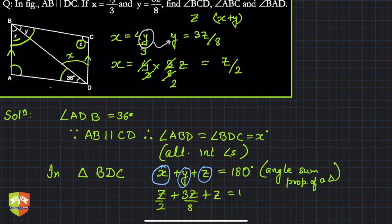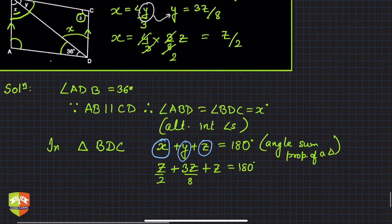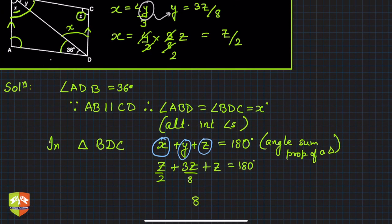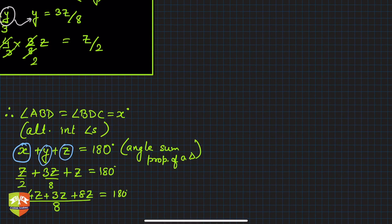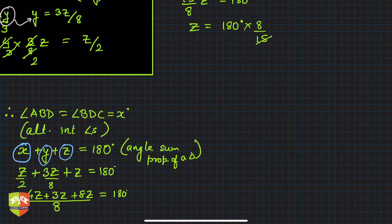Taking LCM as 8: 4z + 3z + 8z = 180 degrees, so 15z/8 = 180 degrees. Therefore z = 180 × 8/15. Since 15 × 12 = 180, this gives z = 96 degrees.